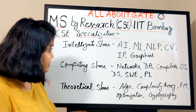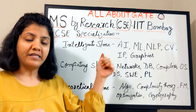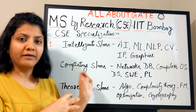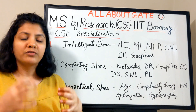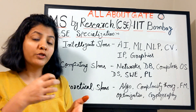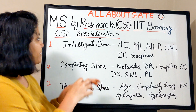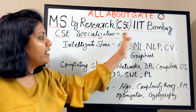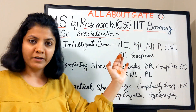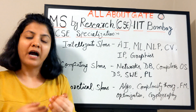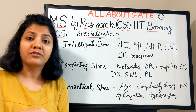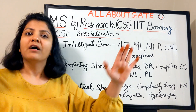To summarize: CSE specializations are related areas grouped under a classified name. If you are selected for a specialization, your courses, research work, seminars, and project work all fall under that area. The selection happens through the interview and written test process, and every specialization has a limited number of seats.